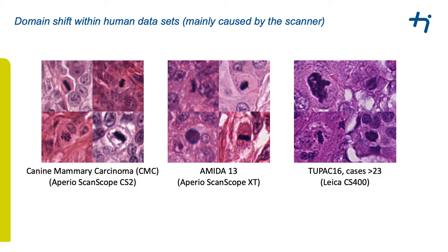We then wanted to answer whether our canine dataset could be used to train models for detecting mitosis in human breast cancer. The answer is: it depends. We fell into an unexpected trap — the major domain shift was caused by the scanner, not the species. Comparing images from the TUPAC16 dataset and its sub-part AMIDAS-13, the only difference was the scanner used. Images from our dataset show a stark similarity to the AMIDAS-13 images, suggesting it would be useful to evaluate on AMIDAS-13 alone.